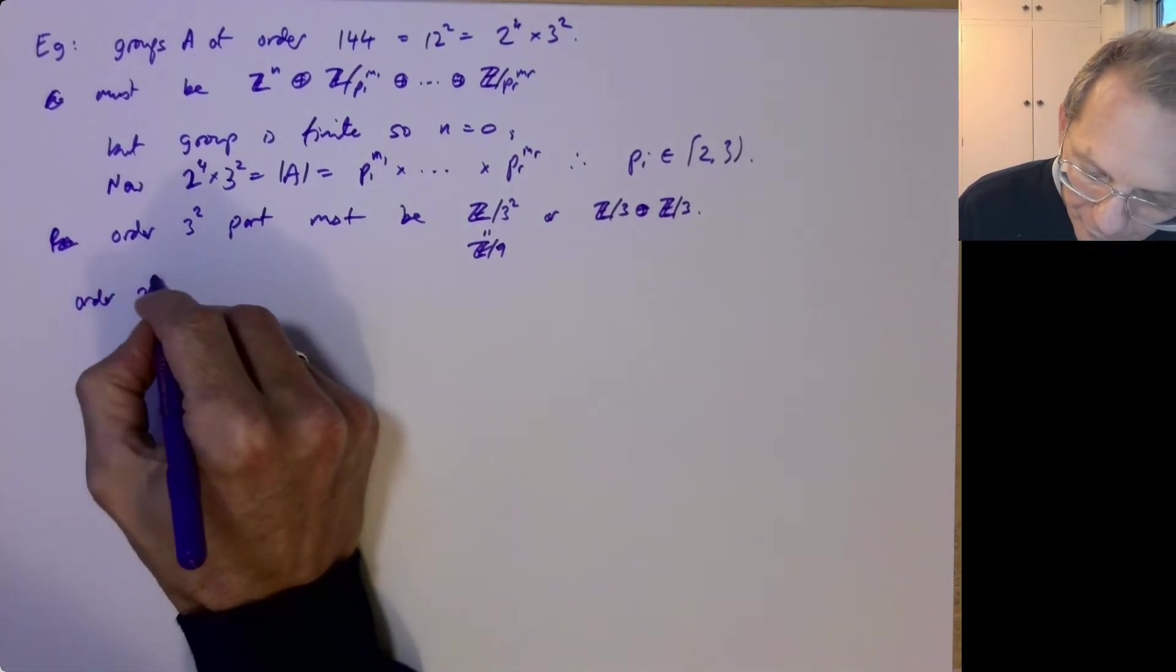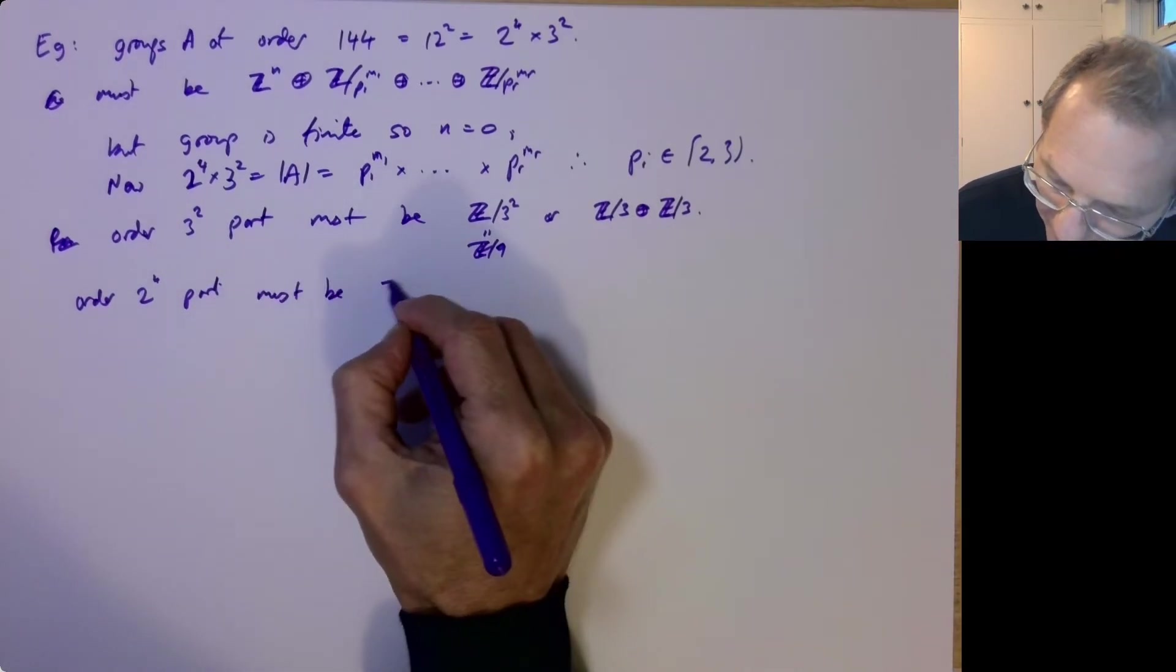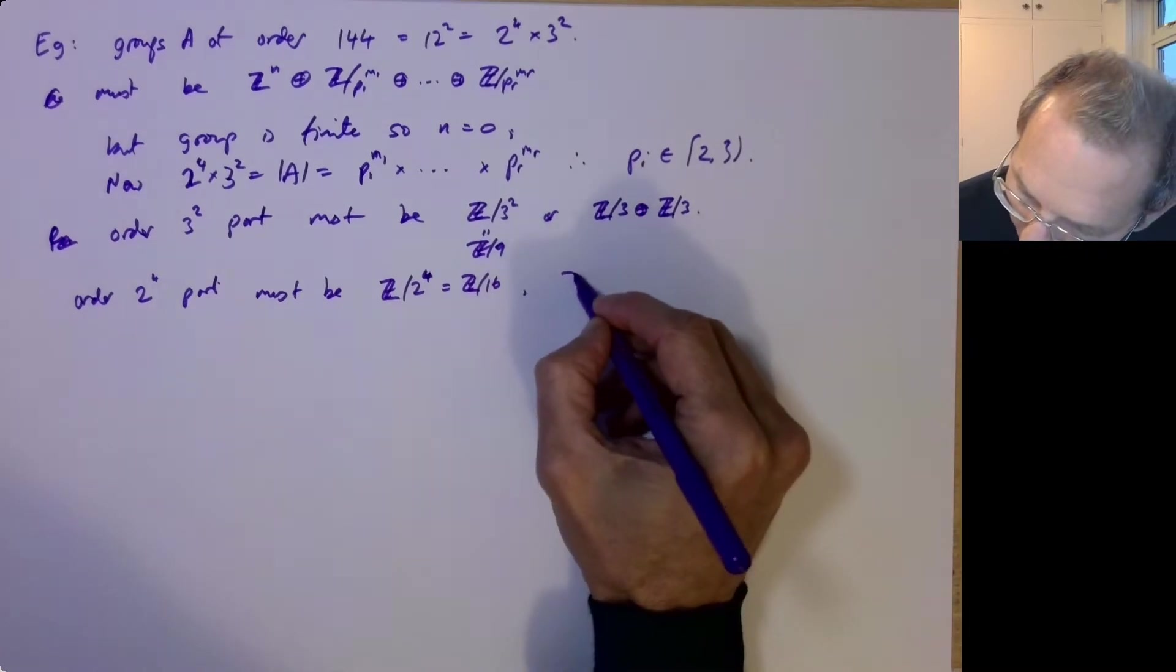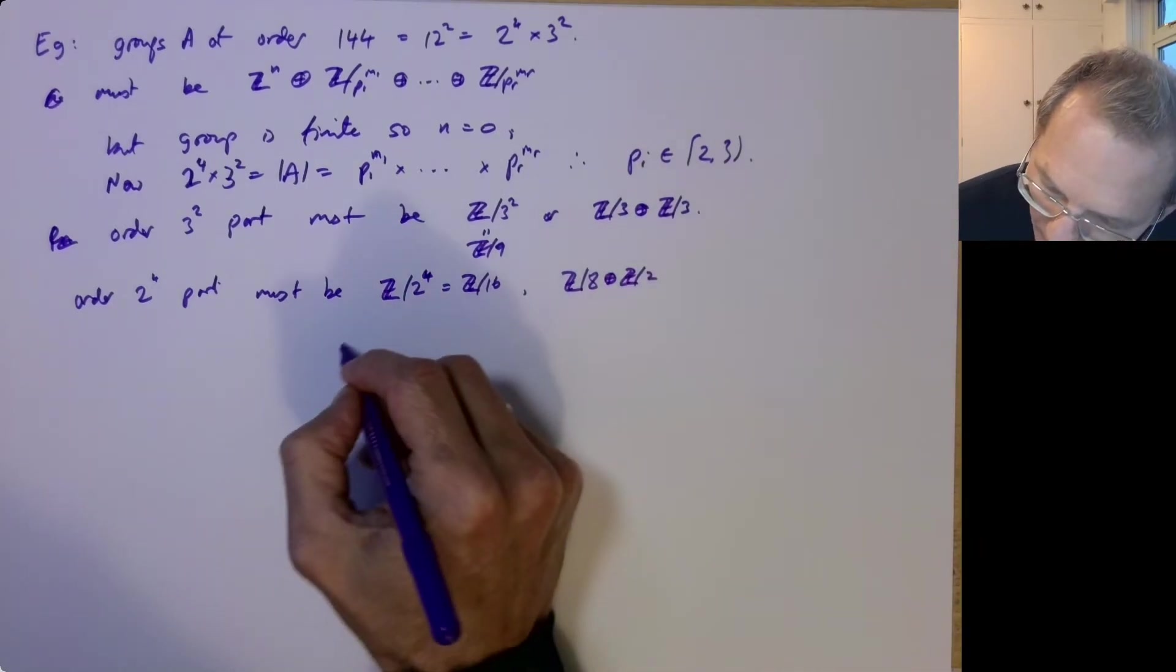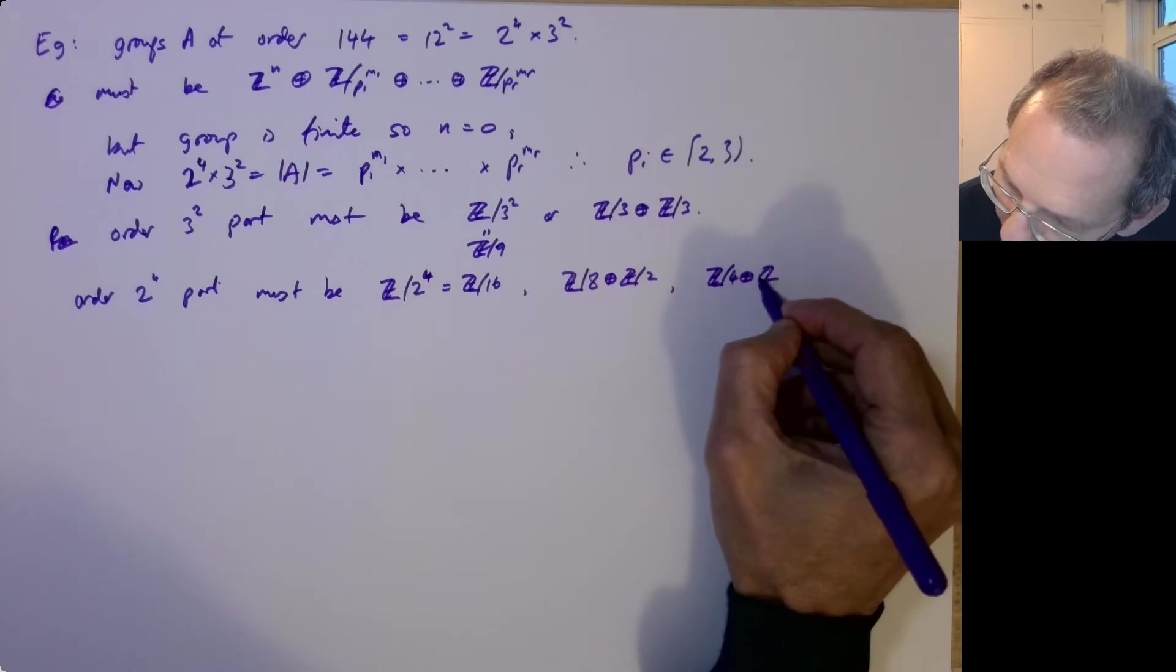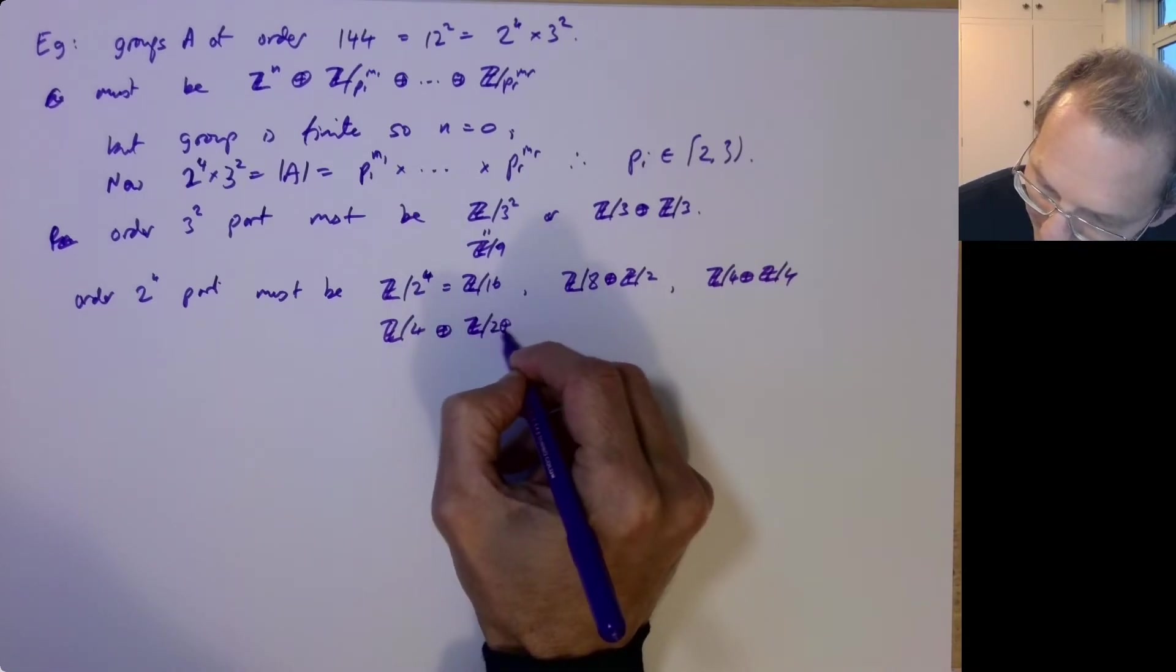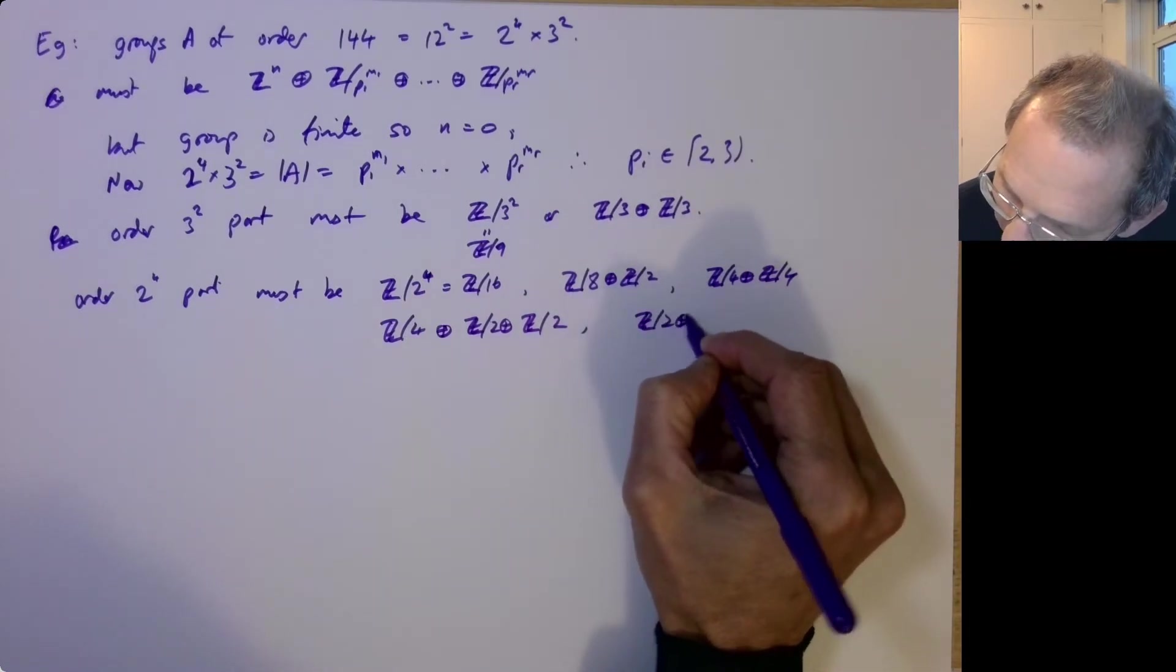So the three primary groups could be either of these possibilities. And then the order 2 to the 4th part, well there's various possibilities. It could be Z mod 2 to the 4th, Z mod 16. Or you could have Z mod 8 plus Z mod 2, or you could have Z mod 4 plus Z mod 4, or you could have Z mod 4 plus Z mod 2 plus Z mod 2, or you could have Z mod 2 four times.